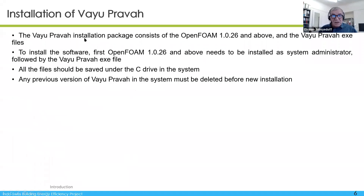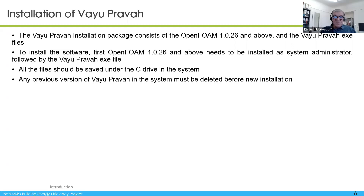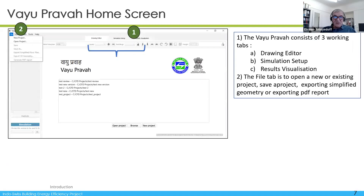Regarding installation, you have to install an OpenFOAM installer which has been designed to be installed under Windows, and then you install the VayuPrava software. One important thing is that the files should be saved under the C drive — they should be on the same C drive, not on others for the time being. Also, if you have another installation, you would have to remove it before installing the next one.